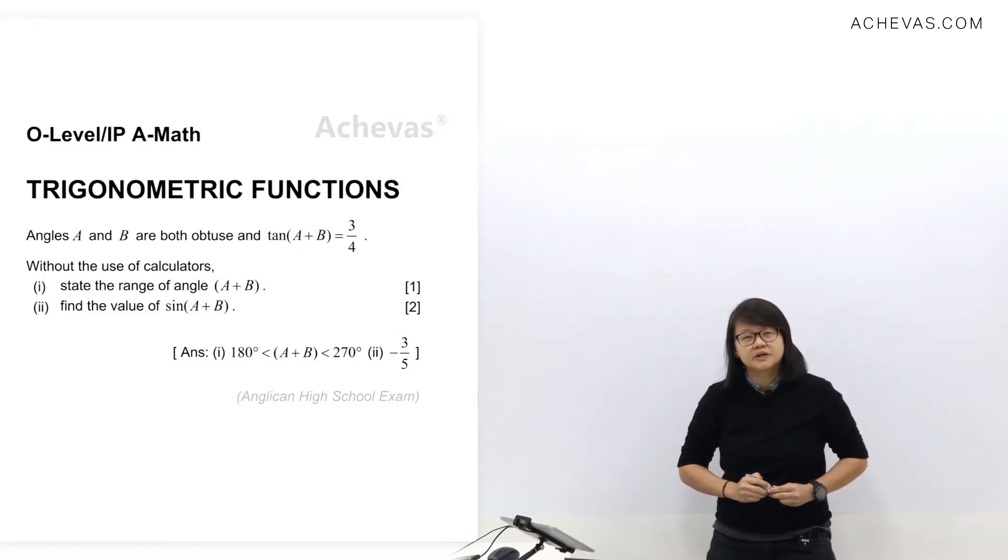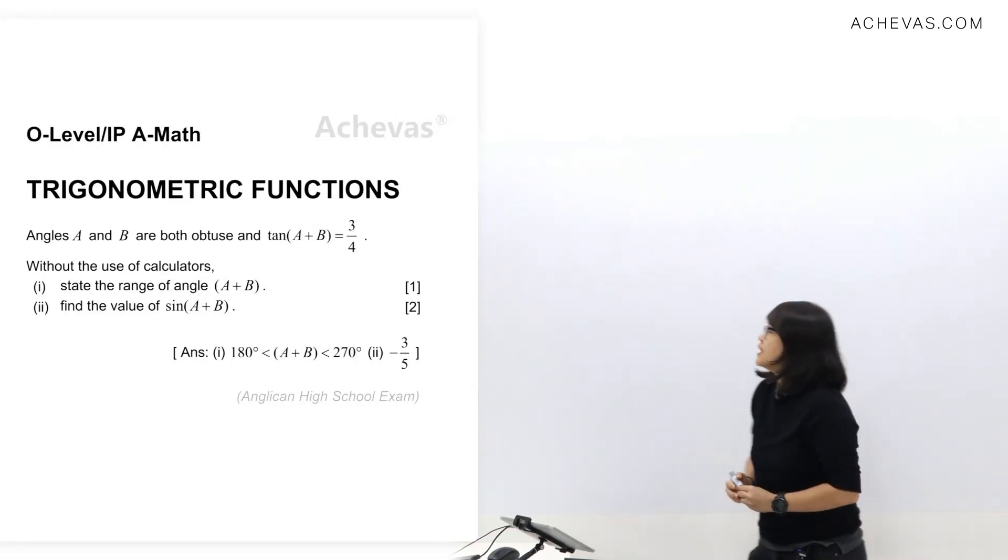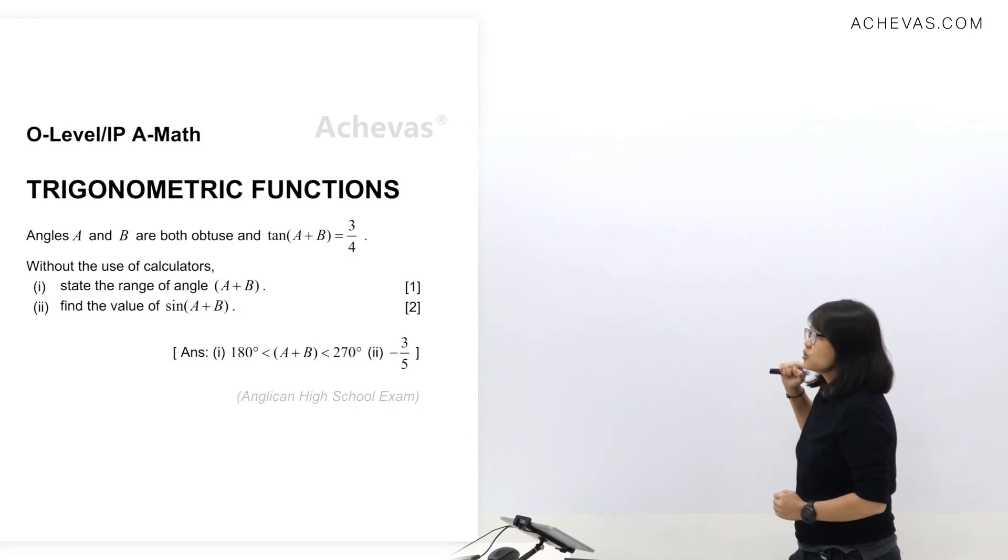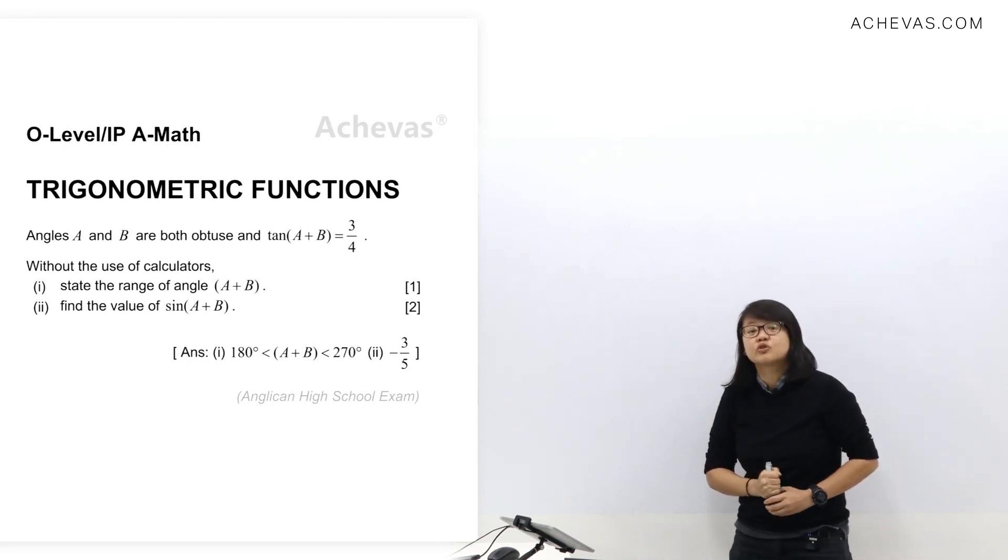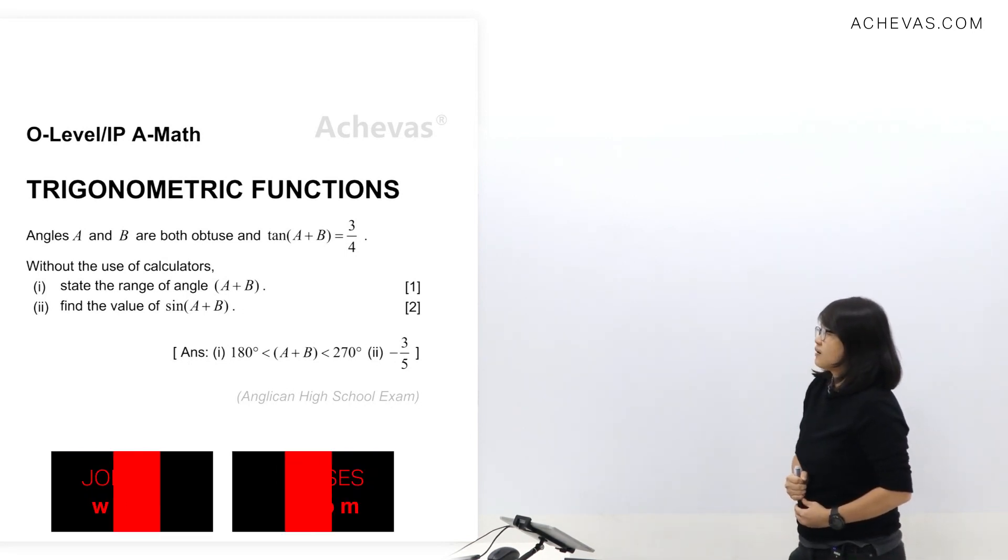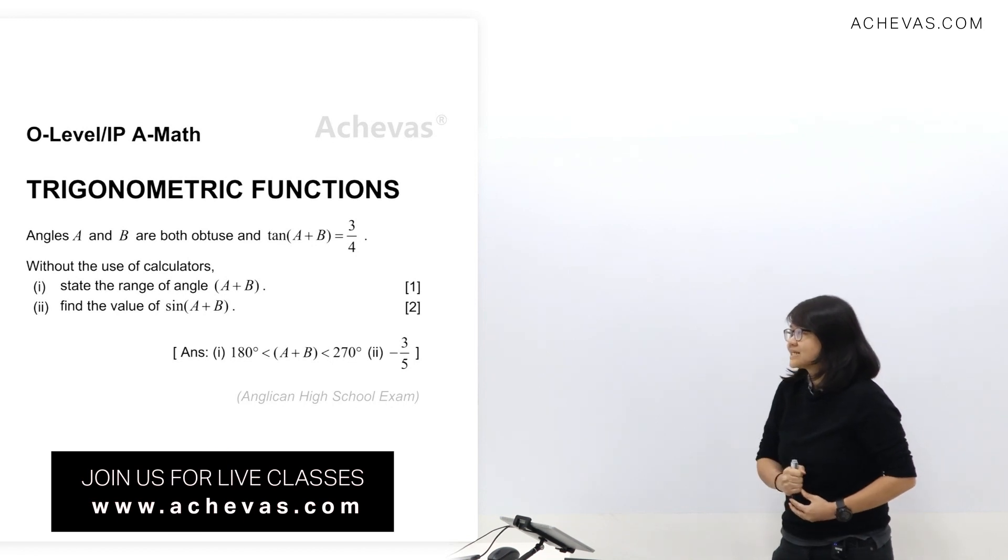Let's take a look at the question on the topic of trigonometric functions. Angles A and B are both obtuse and tangent A plus B equals 3 over 4. Without the use of calculators, part 1: state the range of angle A plus B.